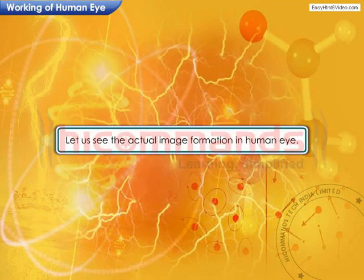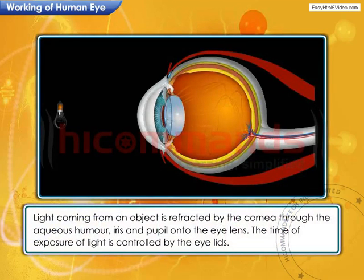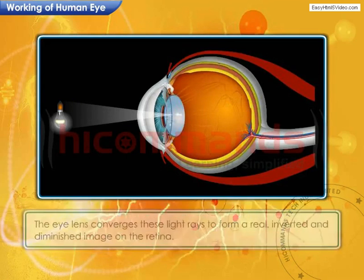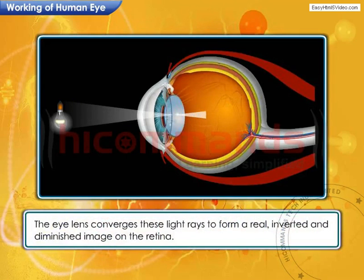Now let us see the actual image formation in the human eye. The light coming from an object is refracted by the cornea through the aqueous humor, iris and pupil onto the lens. The lens converges these light rays to form a real, inverted and diminished image on the retina.